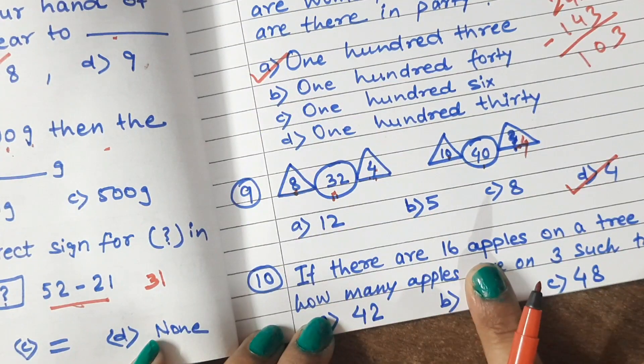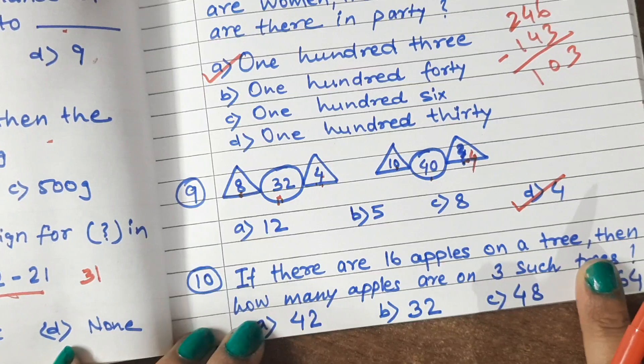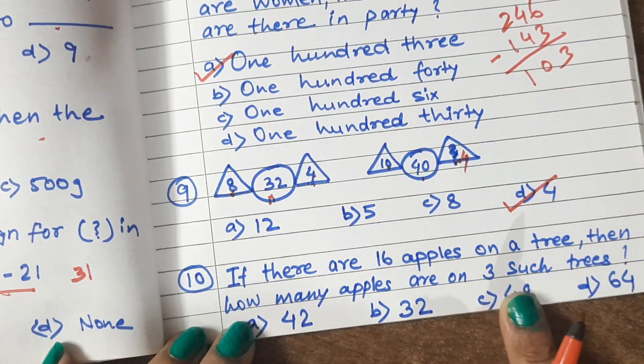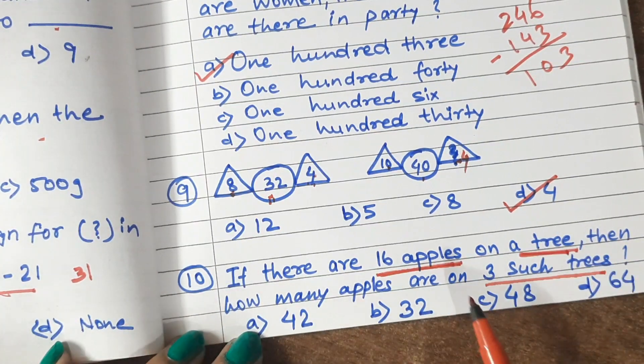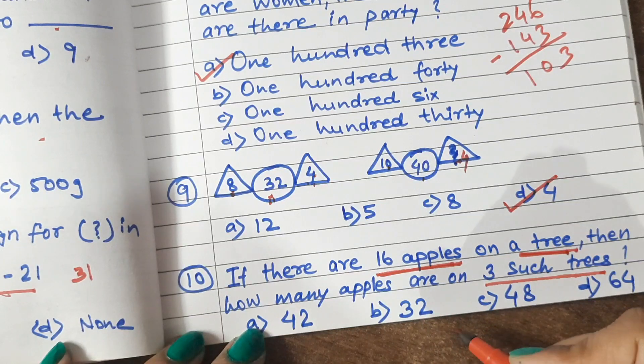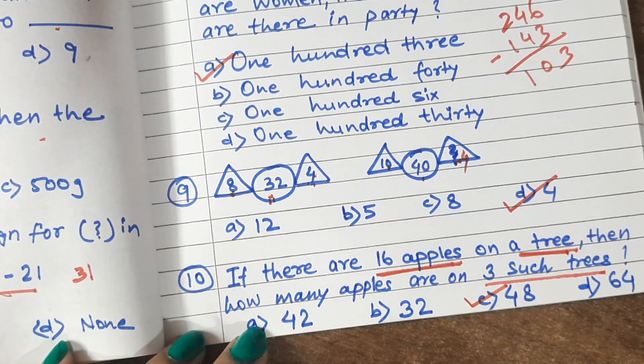Question 10: If there are 16 apples on a tree, then how many apples are on 3 such trees? So simply multiply them. 16 times 3 is 48. Answer will be.